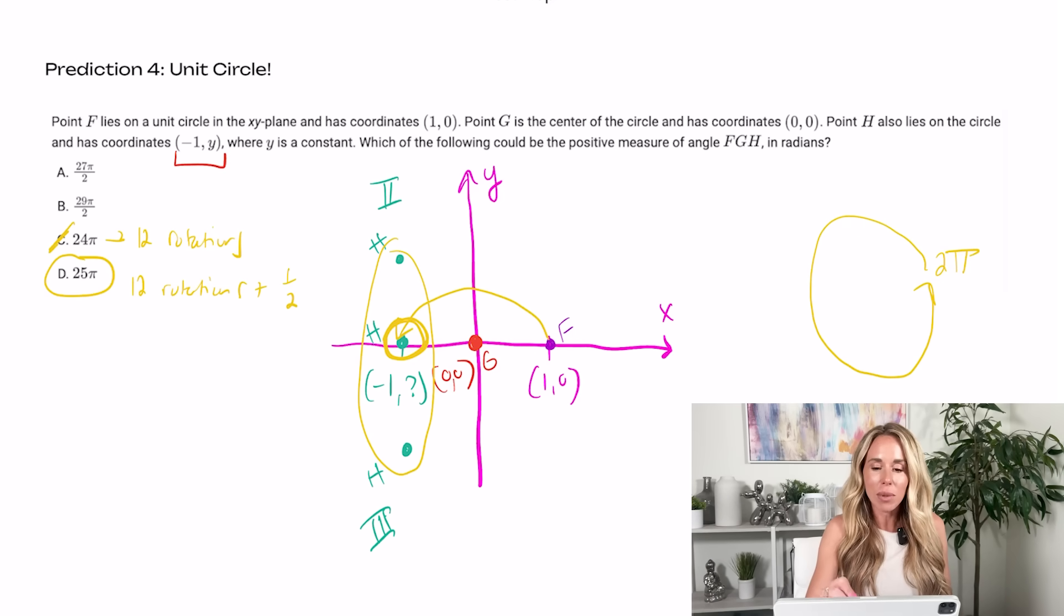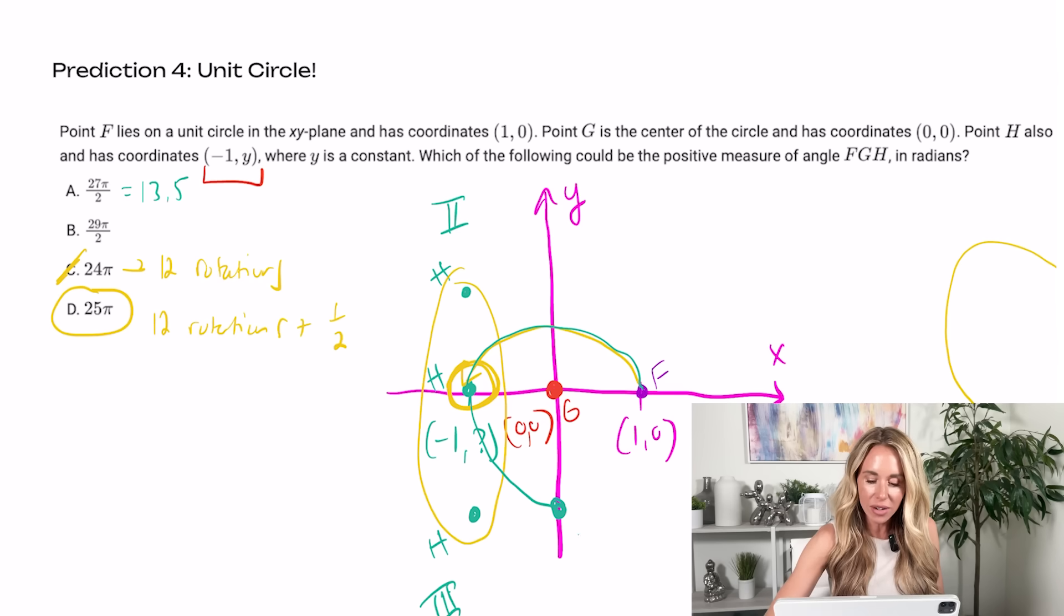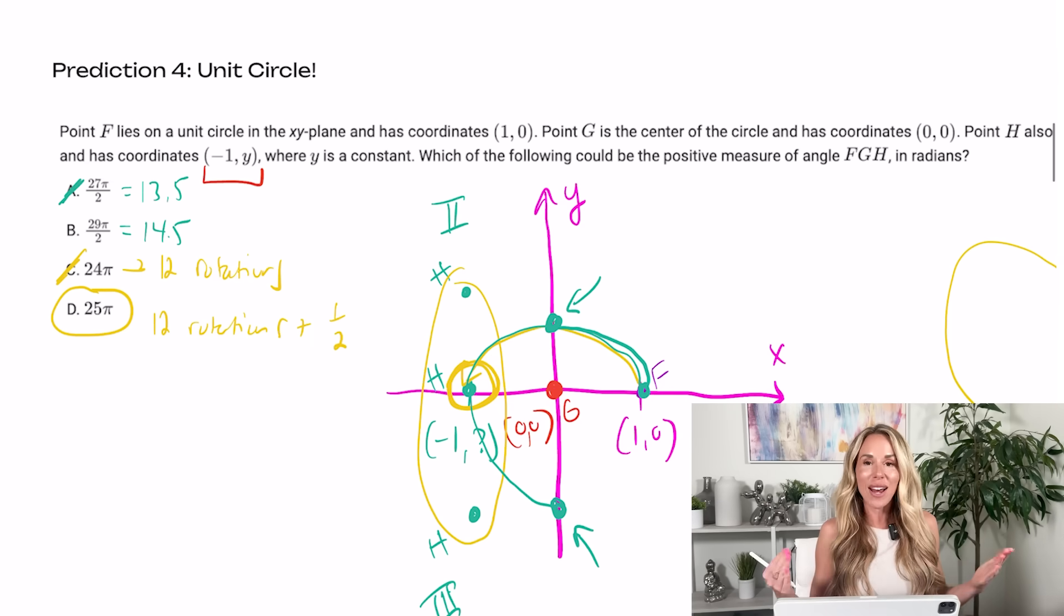So literally we're going to end up right here at this point, which is exactly one of the points where Y could be 0 and then we're at negative one. The problem with A and B, A is, I think you get 13.5. So you would be a half rotation because of the 13 is odd, but then another quarter rotation, you're going to be down here. That's not going to work. And then 29 pi over two gets you 14.5, where it's an even number. So you're going to be back at the beginning and then you're only going to quarter. So you're only going to be up there. That's not going to work. So anyways, D is right. D gets you all the way around 12 times and then halfway around one more time, which puts you at a place where point H can be.